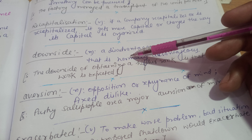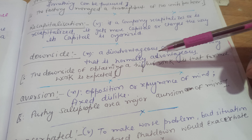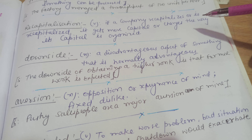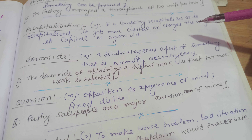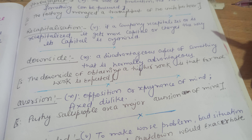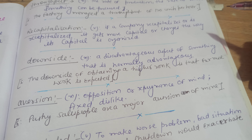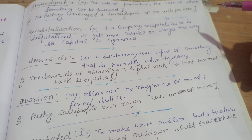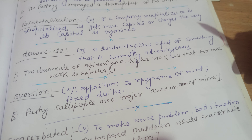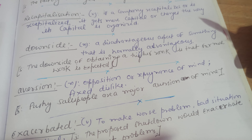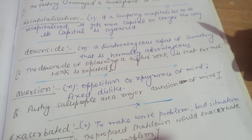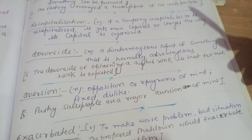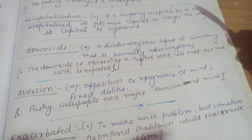The sentence for downside is: the downside of obtaining a higher rank is that far more work is expected. Like if I am getting a good rank in my office, then what will happen is that people will expect me to deliver more work. This is the downside.